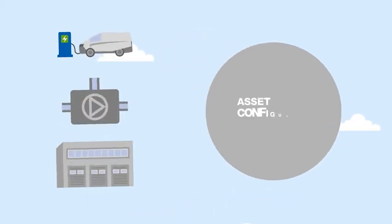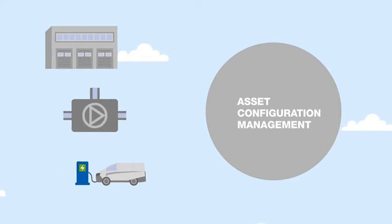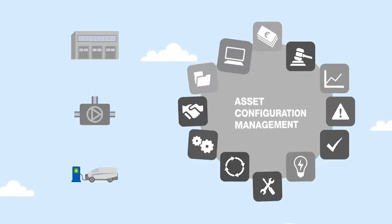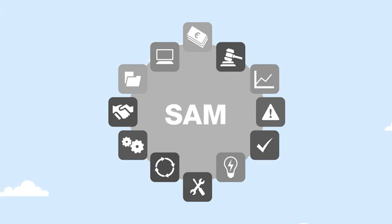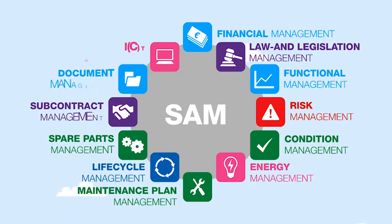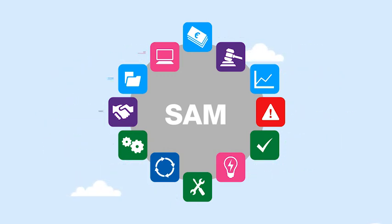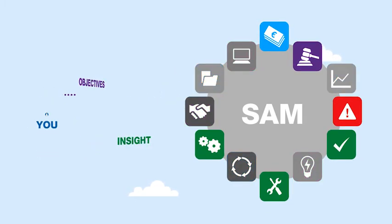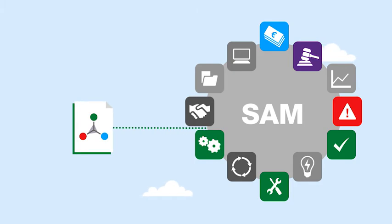SAM classifies your assets. The SAM modules are based on this classification, enabling the modular asset management module to integrate all asset management areas — from financial management to risk management, and from energy management to maintenance plan. Based on your objectives, you choose the modules that are relevant, and SAM provides you insight on the risk, cost and performance of your assets.